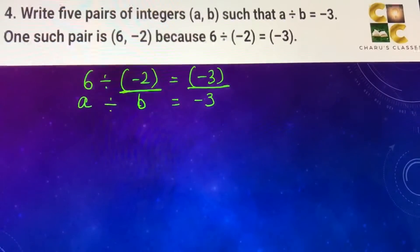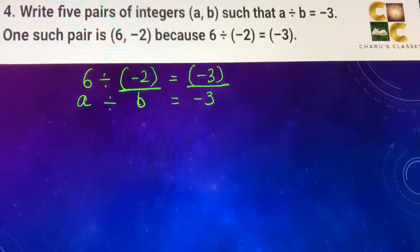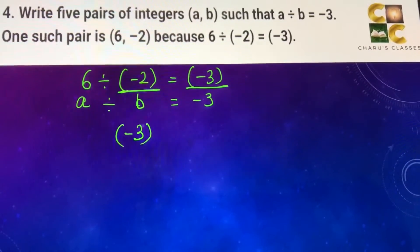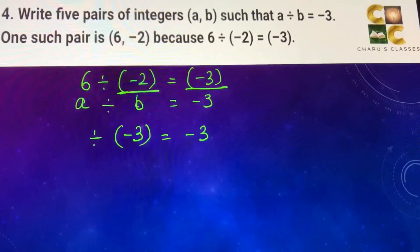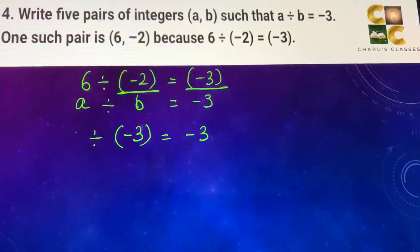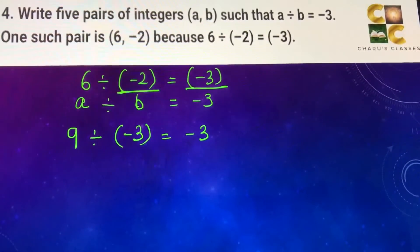For example, if I take the multiple as minus 3, so basically minus 3 into minus 3, I can write 9. 9 divided by minus 3 is minus 3.